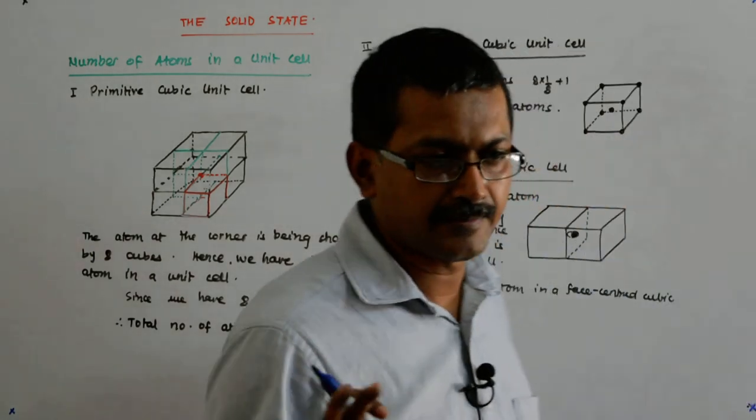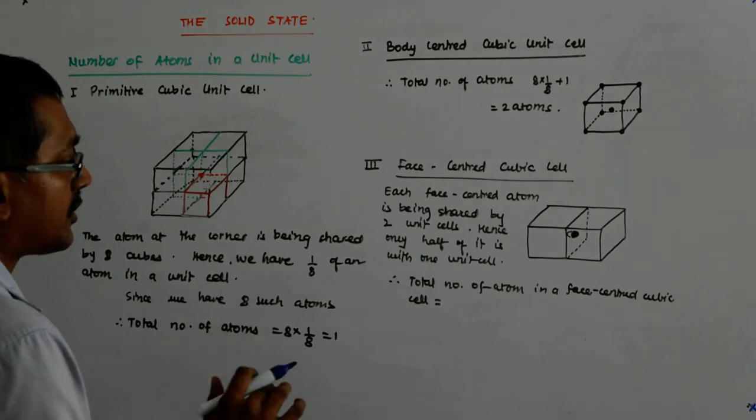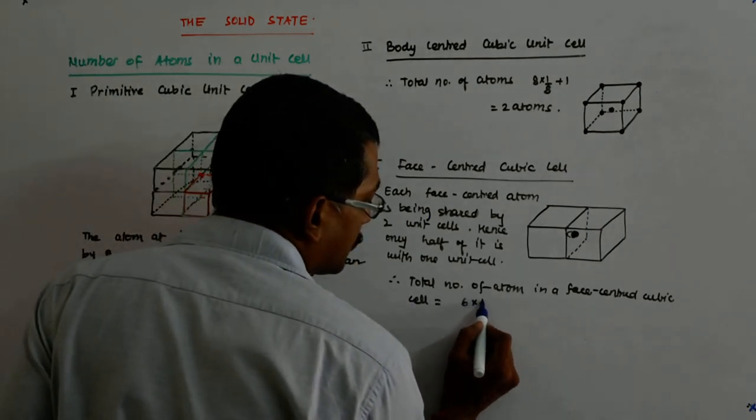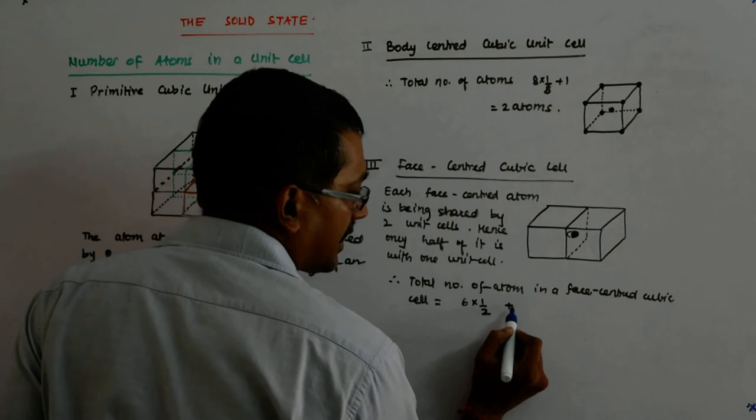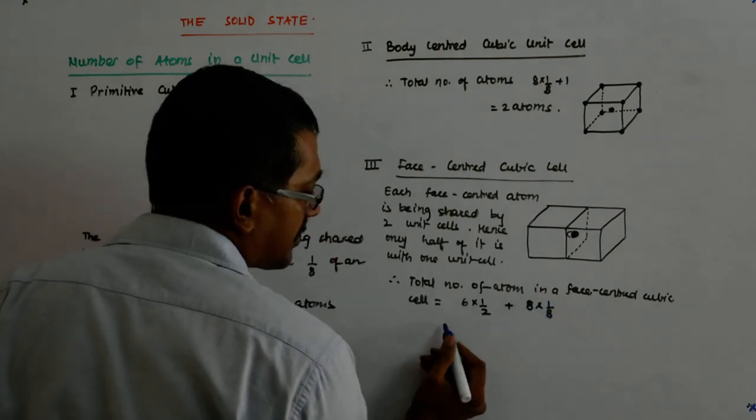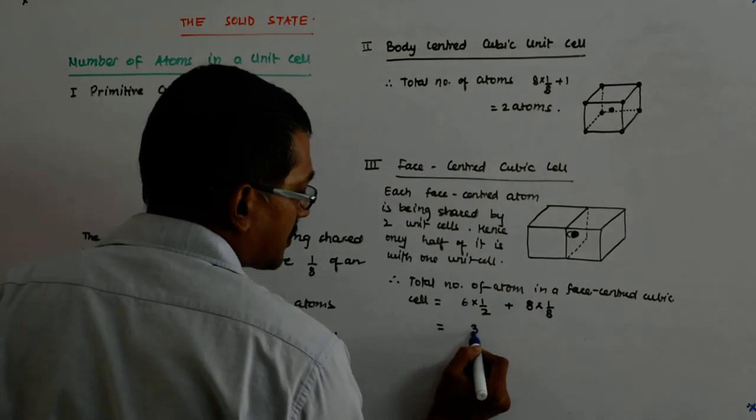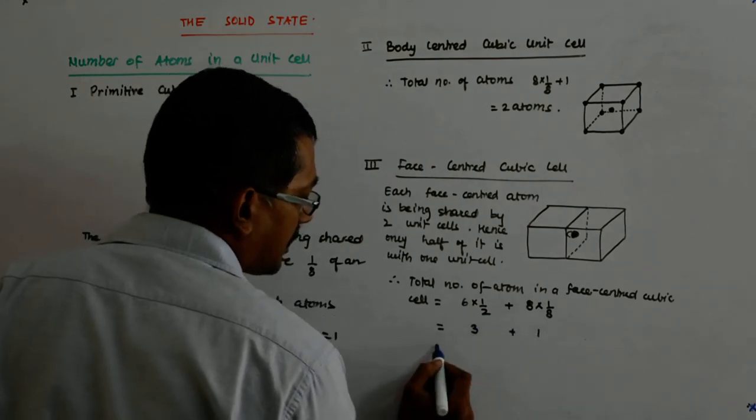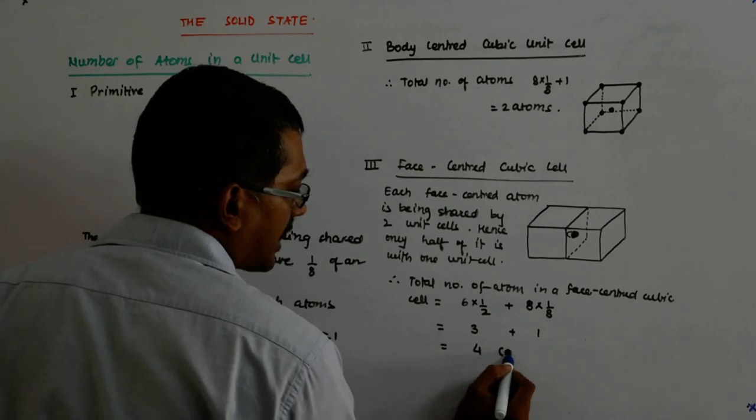In addition, so that is always there. So, it is 6 into half plus 8 into 1 upon 8, which is equal to 3 plus 1, which is equal to 4 atoms.